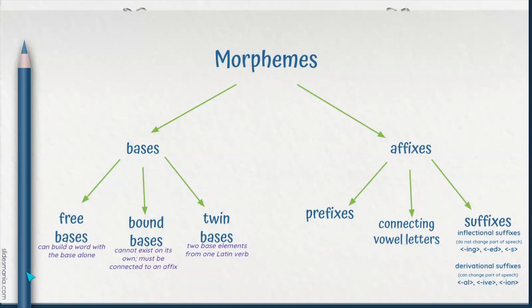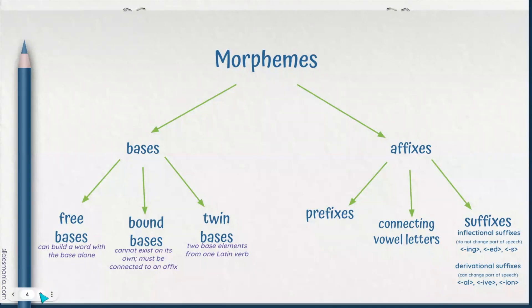Every single word has a base. Some words are just the base with no affixes attached to it. Bases can be further divided into several categories: free bases, bound bases, and twin bases. Affixes are typically thought of as prefixes and suffixes, but we cannot forget the connecting vowel letters that come into play as we start digging into some of the different words that we use in English spelling.